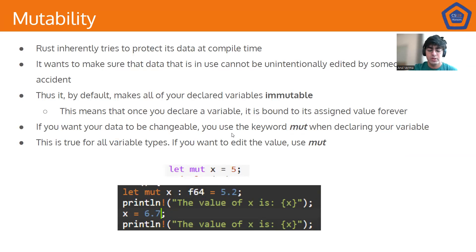So, next, let's talk about a concept called mutability. Rust is very different from other languages in how it handles its data. Programming languages like C++ and Java have something called memory management systems. Rust doesn't have an equivalent, per se. And so, to make sure that its data is protected and isn't deleted by the compiler unnecessarily, it inherently tries to protect its data at compile time. And by default, it makes your declared variable something called immutable. Which just means that once you declare a variable, it is bound to its assigned value forever.